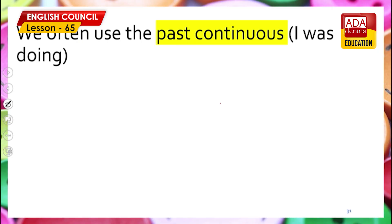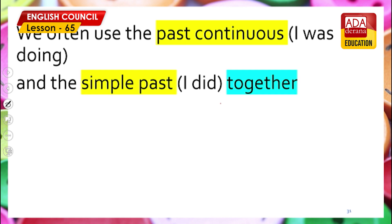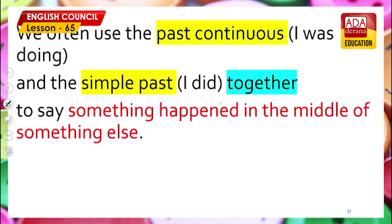Look at the screen — past continuous: 'I was doing,' 'she was doing,' 'he was doing,' 'they were doing,' 'we were doing,' 'you were doing,' 'it was doing.' And the simple past: 'I did,' 'we did,' 'you did,' 'they did,' 'he did,' 'she did,' 'it did.' Together, you connect these with the conjunction 'when' or 'while' — something happened in the middle of something else.